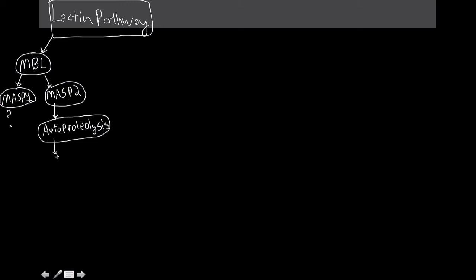MASP2 is going to automatically cleave himself and activate himself. This happens upon activation of mannose binding lectin. So MASP2 goes autoproteolysis, which, as its name implies, we now have ourselves an active MASP2.